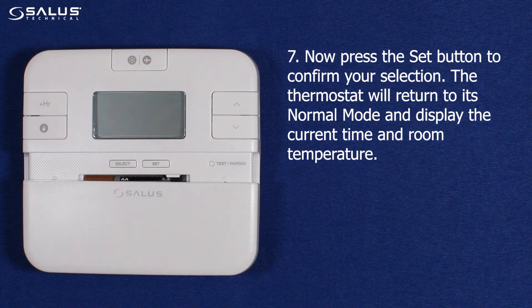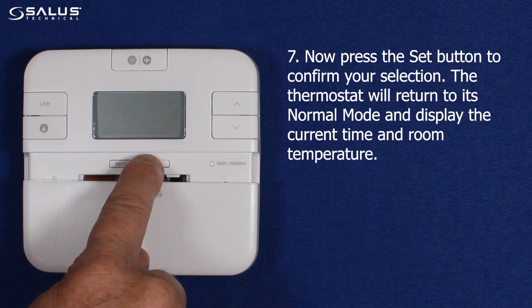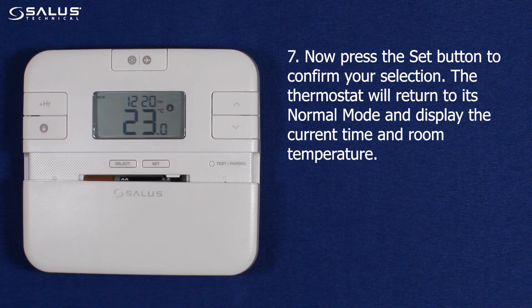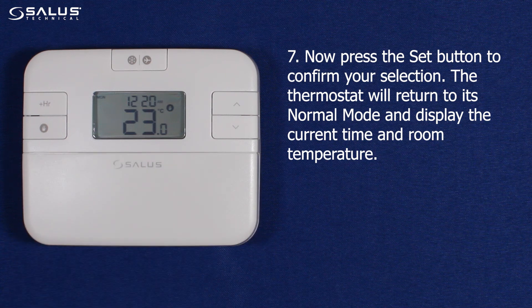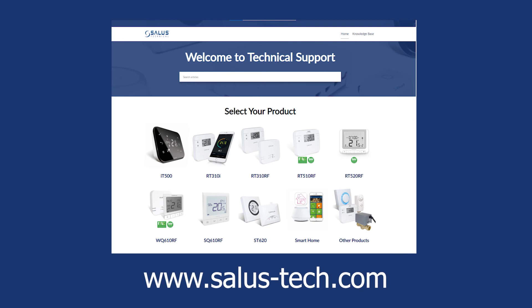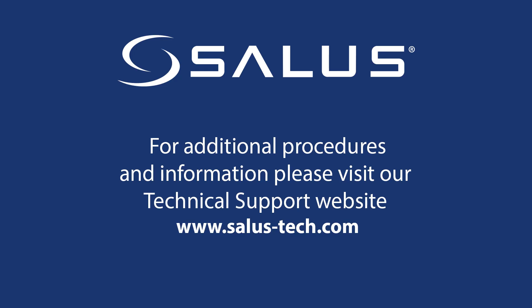Step 7: Press the set button to confirm your selection. The thermostat will return to its normal mode and display the current time and room temperature. For further details about installer mode settings on your thermostat, please visit our technical website at www.salis-tech.com. Thank you.